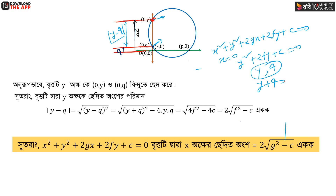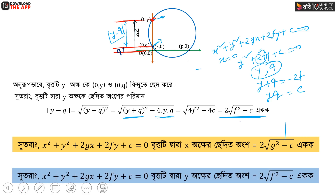The y-intercept length is 2 root over f squared minus c, and the x-intercept length is 2 root over g squared minus c.